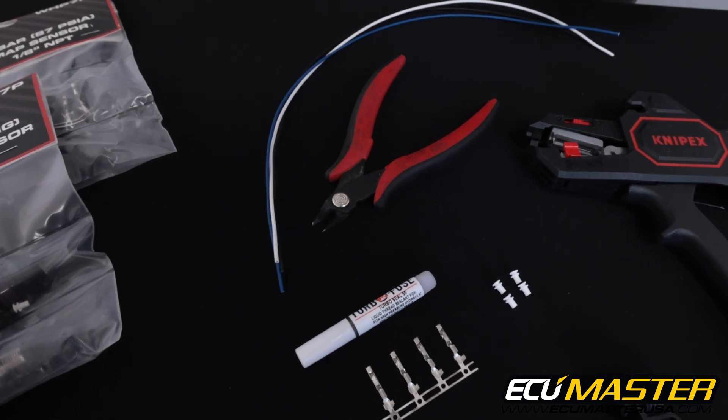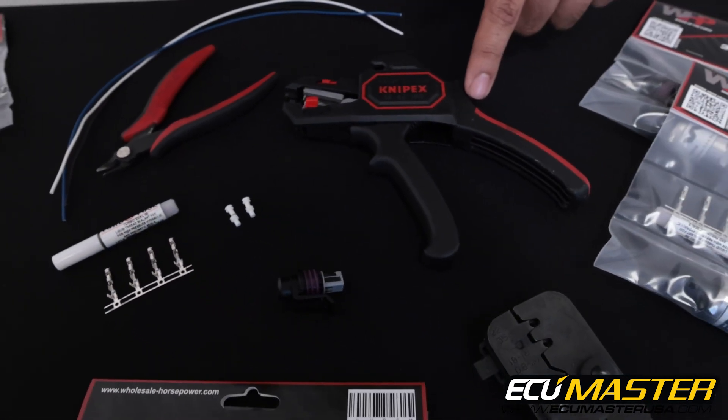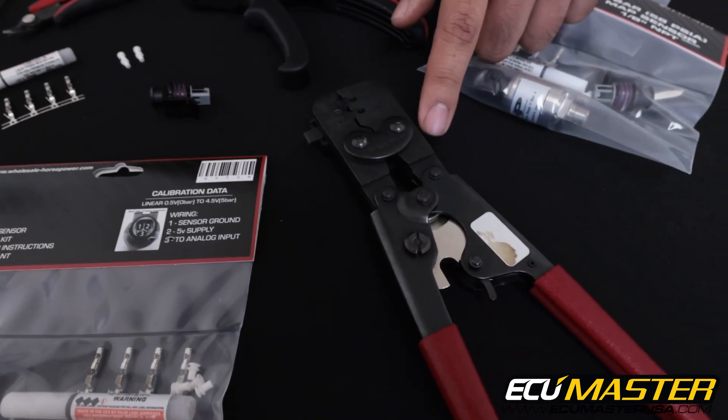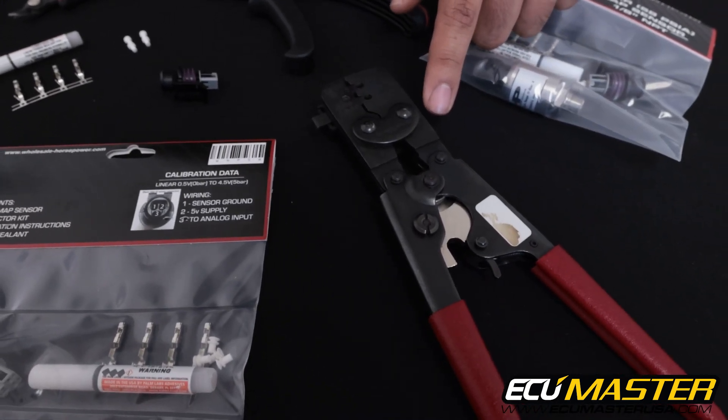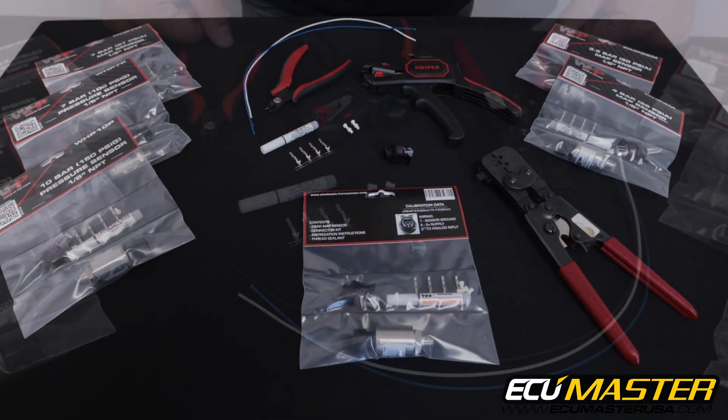Next, the tools we're going to use for this are a pair of flush cuts, wire strippers, and a high quality crimp frame designed for the terminals you're working with. There's going to be a link in the description for all of these tools so you can use exactly the same stuff we're using.